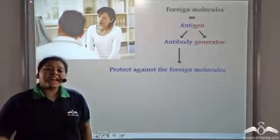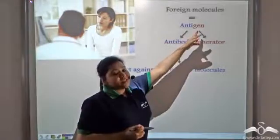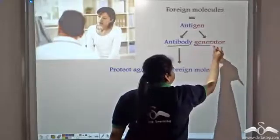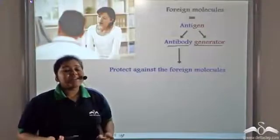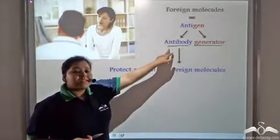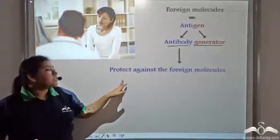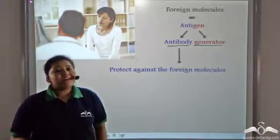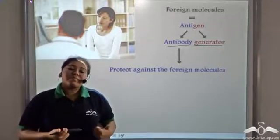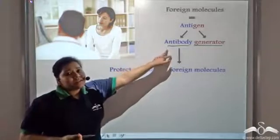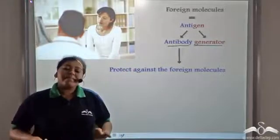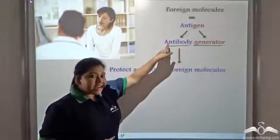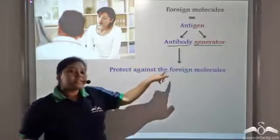The foreign molecules that invade our body are known as antigens. 'Anti' comes from antibody and 'gen' from generator — antigen is an antibody generator. An antibody is a molecule which protects against foreign molecules that have invaded our body. There are certain white blood cells present in our body which secrete these proteinaceous molecules known as antibodies that provide protection against foreign particles.